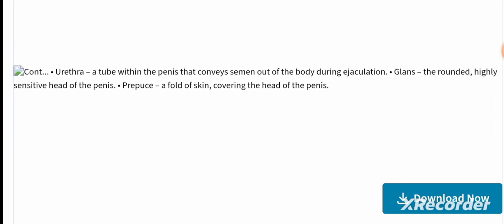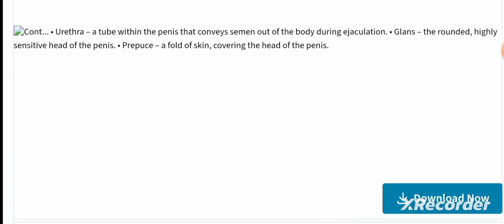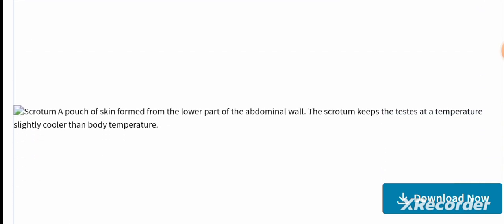The urethra is a tube within the penis that conveys semen out of the body during ejaculation. The glans is the rounded, highly sensitive head of the penis. The prepuce is a fold of skin covering the head of the penis. These three parts are the urethra, glans, and prepuce.